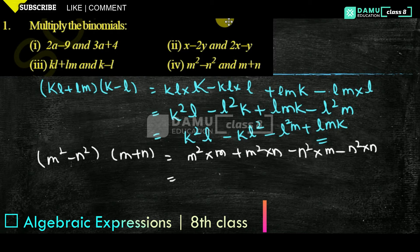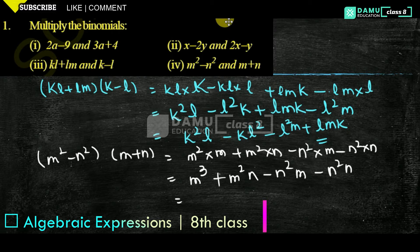So m² into m will become m cubed, plus m²n, minus n²m, then minus n² into n.